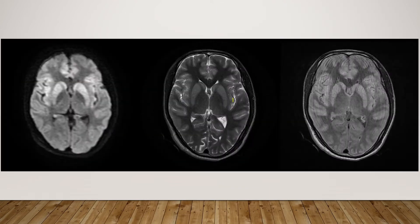Here are the key images. On this T2 weighted image we can see that there are hyperintense signals in bilateral lentiform as well as caudate nuclei. These findings are confirmed on the FLAIR images, and besides that there are hyperintense signals in the bilateral cerebral cortex, especially the insular cortex, which are showing restricted diffusion on the diffusion weighted imaging.